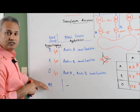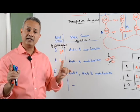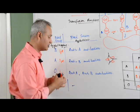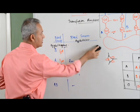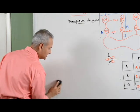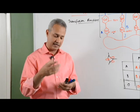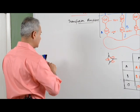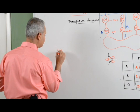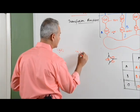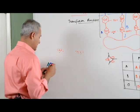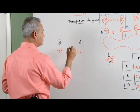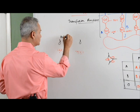Now we understand what is on the surface of blood cells and what is in the serum. Let us talk about how blood typing is done. A person's blood is taken, and the RBCs are placed in two spots on a slide. Then we drop anti-A serum on one spot and anti-B serum on the other.